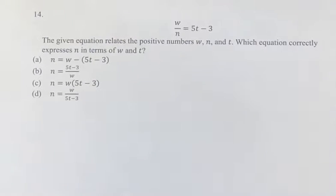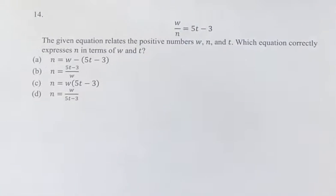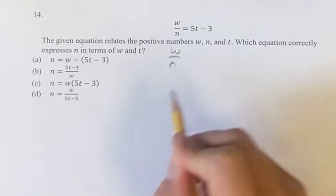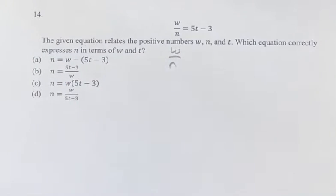Hello and welcome back to another video. In this equation we have w divided by n equals 5t minus 3. And we're asked which of the following equations expresses n in terms of w and t.